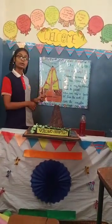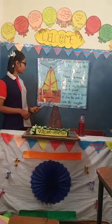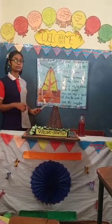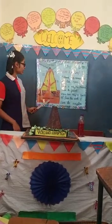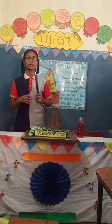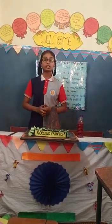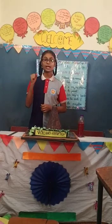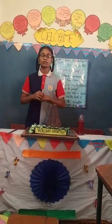A volcano is a mountain which has lava coming up from the magma chamber under the ground. When this magma bursts out from the earth, it causes eruption. There are above 1500 potentially active volcanoes around the world.